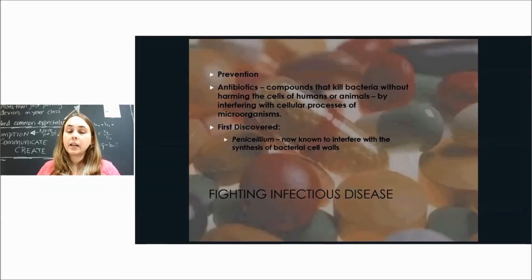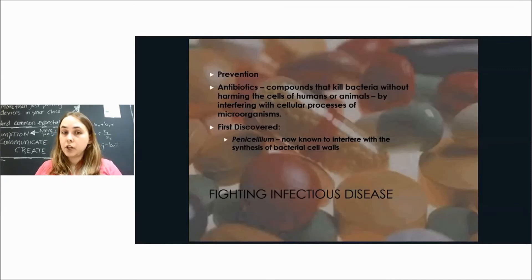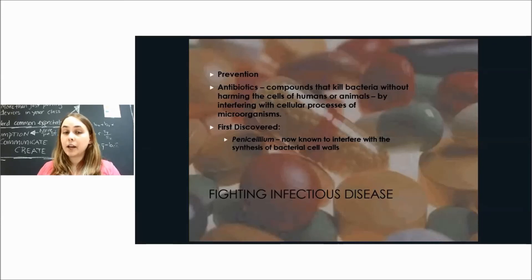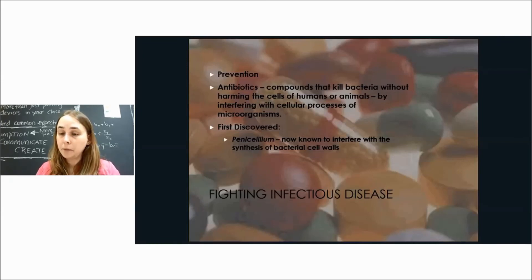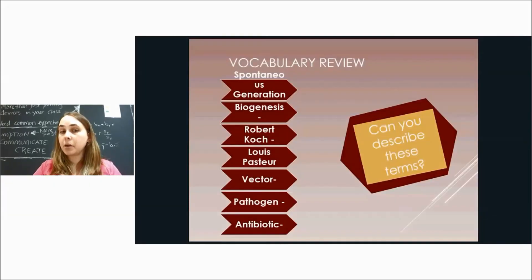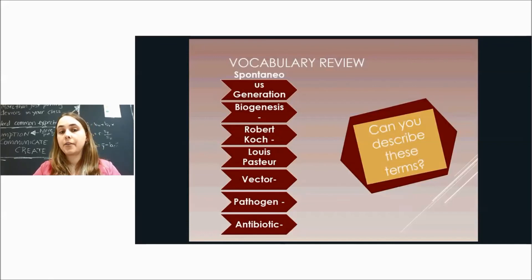For preventing or fighting infectious disease, antibiotics are one key tool. They are compounds that kill bacteria without harming human or animal cells by interfering with the cellular processes of microorganisms. The first discovered antibiotic was penicillin, which interferes with the synthesis of the bacterial cell wall. Key vocabulary to know includes: spontaneous generation, biogenesis, Robert Koch, Louis Pasteur, vector, pathogen, and antibiotic. Make sure you can describe all of these terms comfortably.